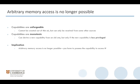Now what is the implication of CHERI? First, capabilities are unforgeable, which means that they cannot be created out of thin air — they have to be received from some other source. And secondly, capabilities are monotonic, meaning that you can only derive a capability from an old capability if the new capability is less privileged. So you cannot increase your privilege by expanding the capability to a larger bound, for example. The implication is that arbitrary memory access is no longer possible; you have to have the capability to a memory region to be able to access it.